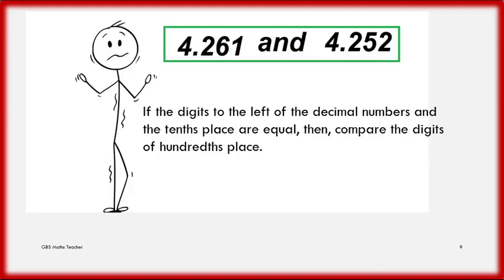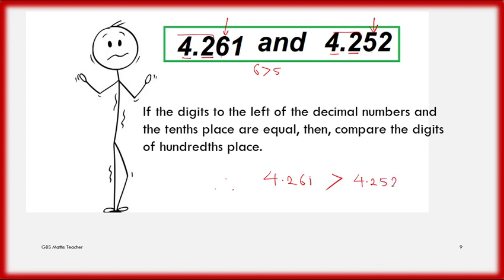I'm again confused with this question. The next question is 4.261 and 4.252. The left number is the same. The tenths place digit is also the same. If the digits to the left of the decimal and the tenths place are equal, then compare the digits of the hundredths place. Here is 6 and here is 5 — both in the hundredths place. 6 is greater than 5. Therefore, 4.261 is greater than 4.252.